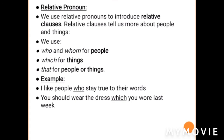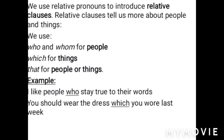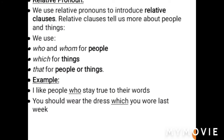Another type of pronoun is the relative pronoun. We use relative pronouns to introduce relative clauses, which tell us more about people and things. We use 'who' and 'whom' for people, 'which' for things, and 'that' for both people and things. Example: 'I like people who stay true to their words' — 'who' is the relative pronoun. 'You should wear the dress which you wore last week' — 'which' is the relative pronoun.